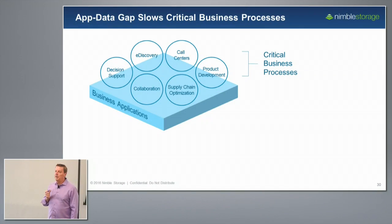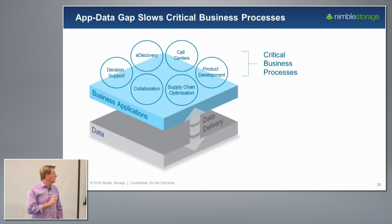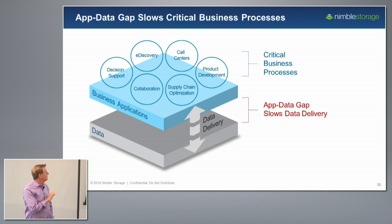Not unlike our frustration when that happens to us, you can imagine that the impact to businesses is even worse and more critical. They're running critical business processes, and when they experience that app data gap, that's business impacting. It's very crucial that we close that app data gap and remove that slow delivery of data.